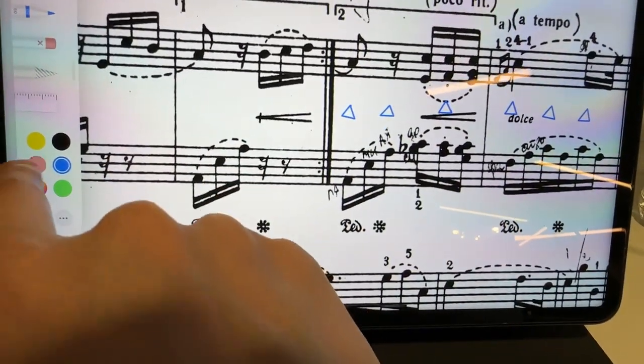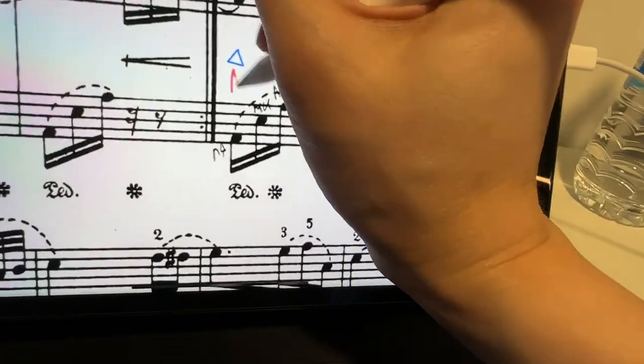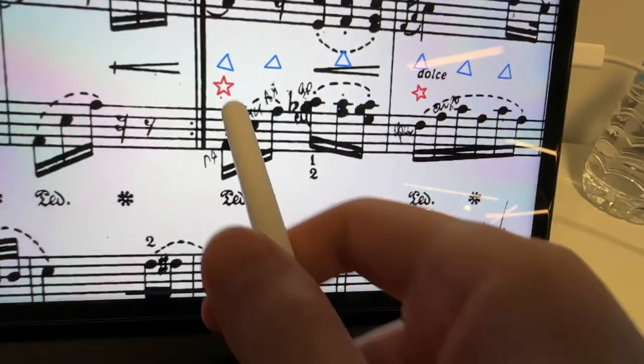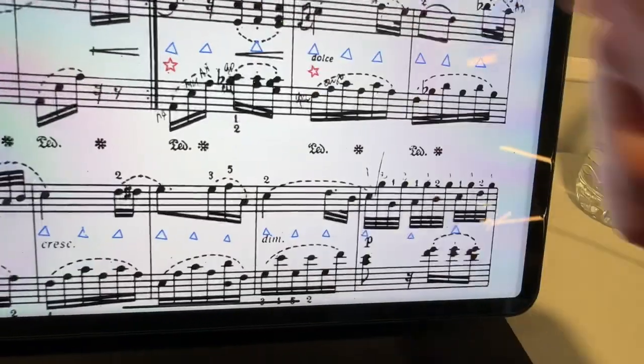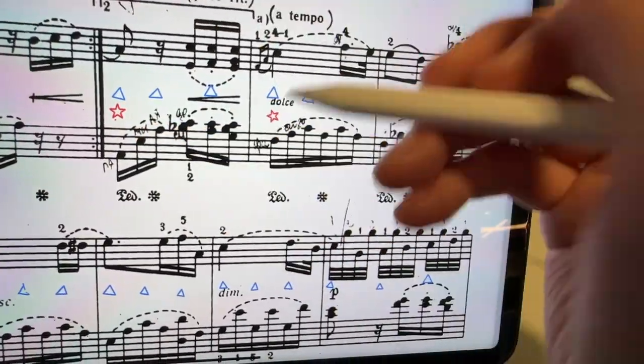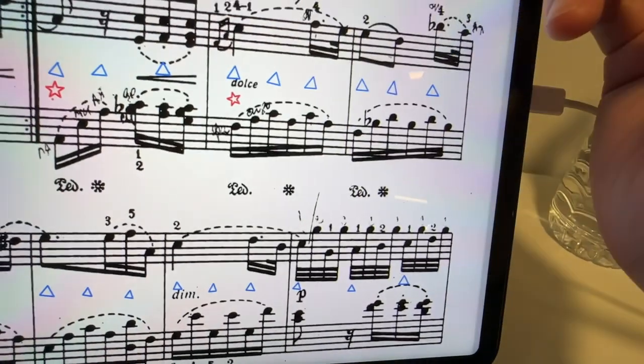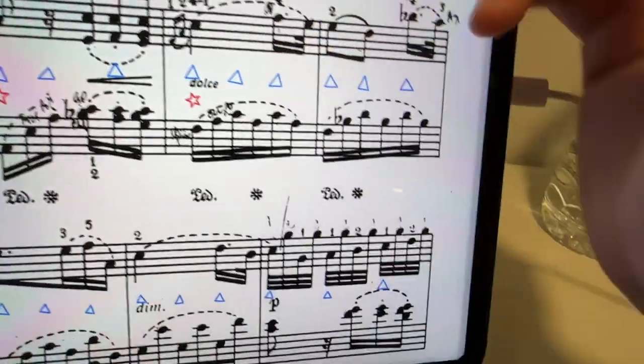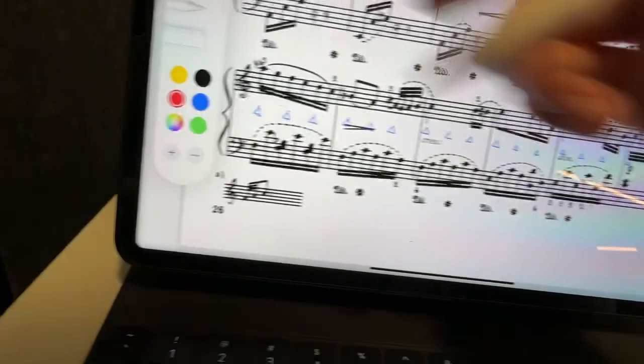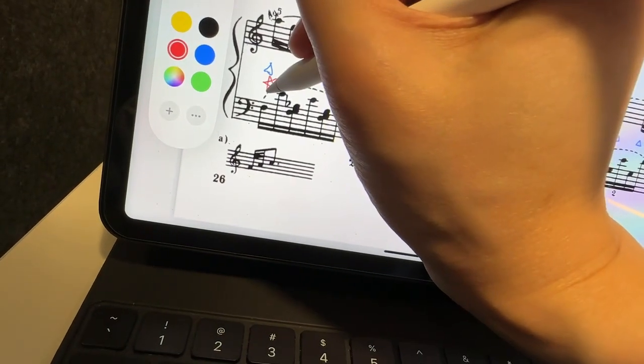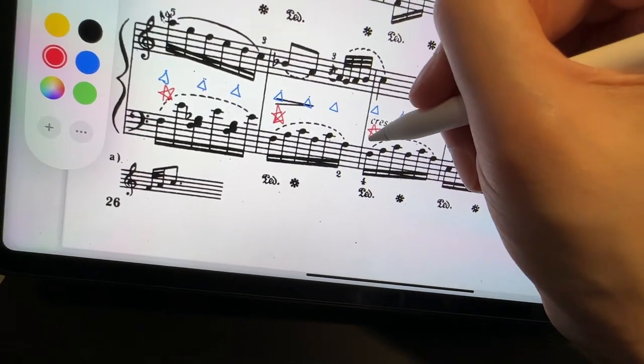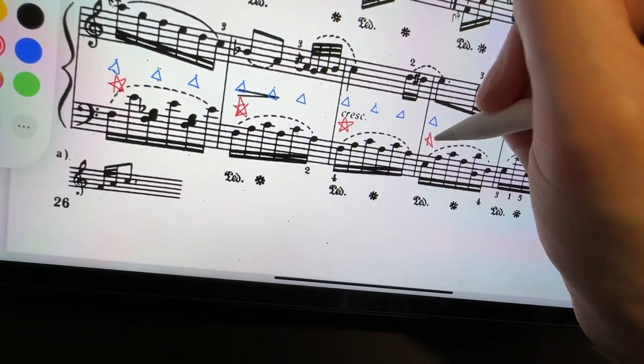And then in terms of the one measure sets, that would just literally be from the first beat of one measure to the first beat of the next. You're always practicing like one measure plus the following beat, from star to star. That would be a one measure set in my methodology. Same thing, of course, from there to there. Probably not necessary to mark all of the stars, but that's what it would be.